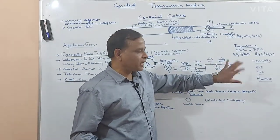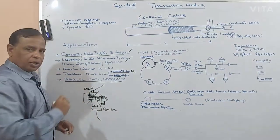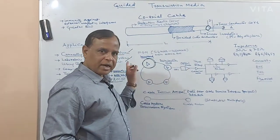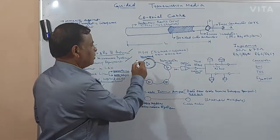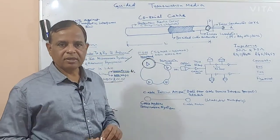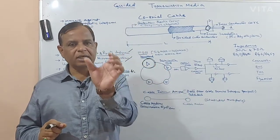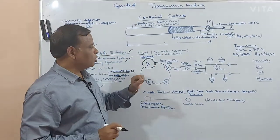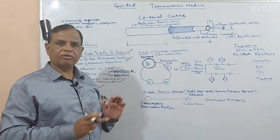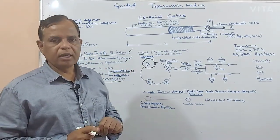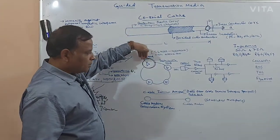The cable operator, who earlier might have set up his own cable network, no longer needs to use that equipment. He is getting a connection from the head end with all the channels — well multiplexed in frequency division multiplexing. Each TV channel requires six megahertz bandwidth. So many channels are multiplexed in the form of frequency division multiplexing — this is possible only in analog communication.